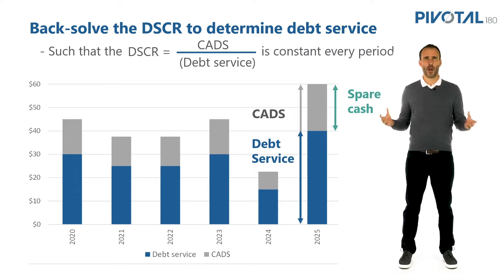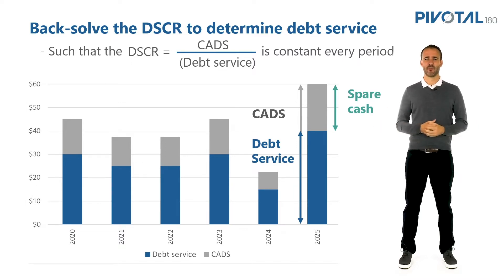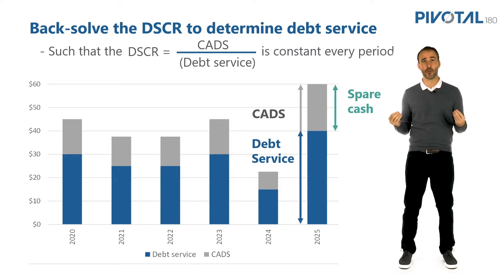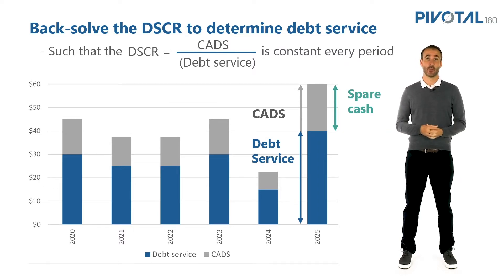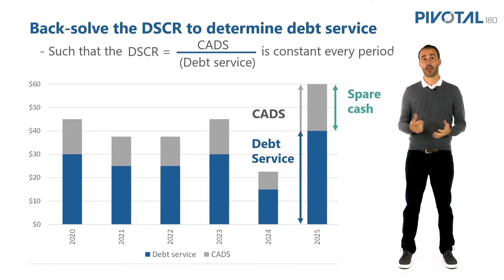So why would we do this? Why would we want to match our repayment profile to the cash flow profile? Primarily because our cash flows could be quite lumpy throughout the life of the project. Some examples: seasonality.